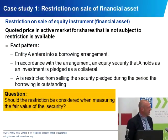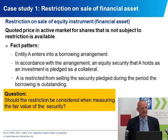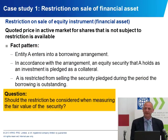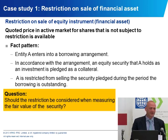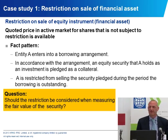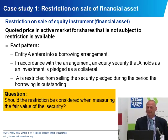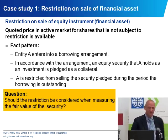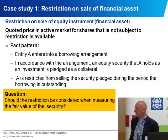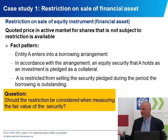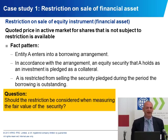The first case study deals with restrictions on the sale of assets and how that affects fair value. An entity holds shares with a quoted price in an active market. The company enters into a loan and, as one of the terms of the loan, pledges this investment as collateral. Because it has pledged the shares as collateral, it cannot sell the shares unless or until it repays the loan. Do you think the fact that this entity cannot sell these shares should impact how it measures fair value?